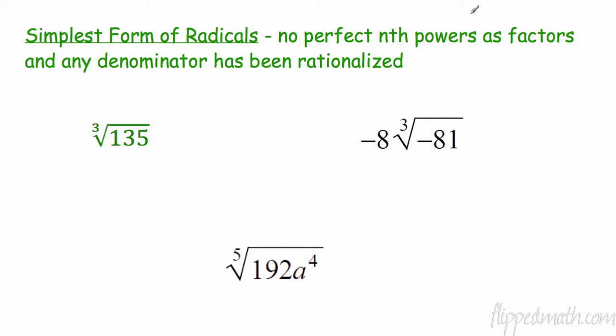Now we're going to switch over to radicals. We've talked about the correlation between a rational exponent and a radical. Now we need to know how to simplify these radicals. Simplest form of radicals means there are no perfect nth powers as factors, and any denominator has been rationalized.